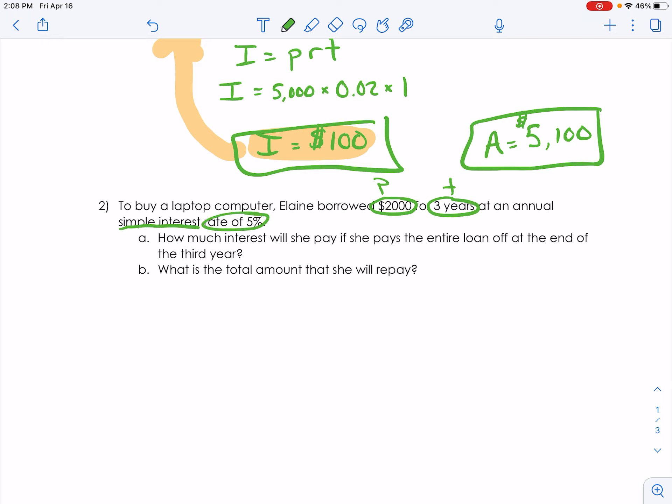And when we move our decimal two times, 0.05. So there's two questions here. A, how much interest will she pay at the end of the loan? And then B, what is the total amount she will have to repay? So let's start with just finding the interest.